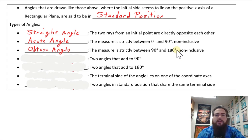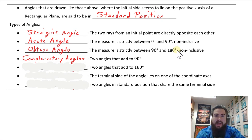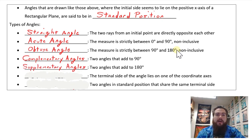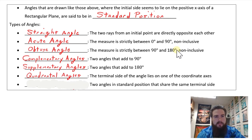If two angle measures sum to exactly 90 degrees — for example, 30 degrees and 60 degrees — they are referred to as complementary angles. If two angles add up to exactly 180 degrees — for example, 110 degrees and 70 degrees — they are supplementary. Angle measures that lie exactly on the coordinate axes, such as 0, 90, 180, 270, and 360 degrees, are referred to as quadrantal angles, because they lie on the axes of the four quadrants of the rectangular plane.